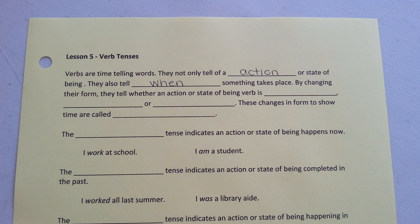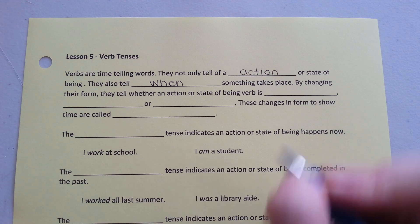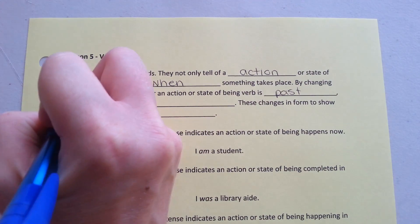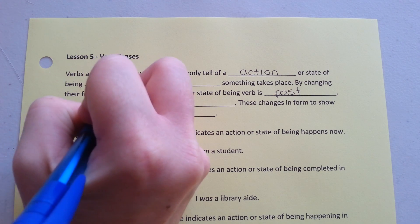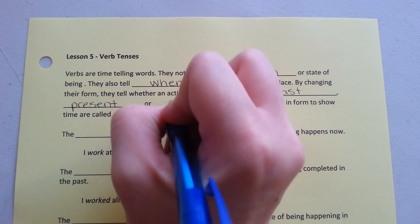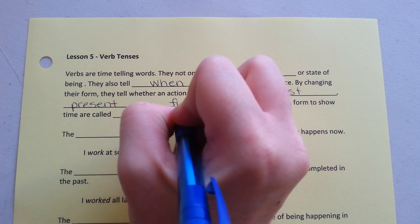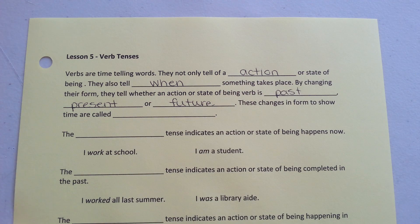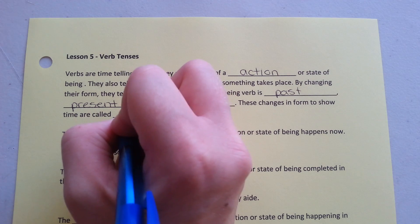By changing their form, they tell whether an action or state of being verb is past, present, or future. These changes in form to show times are called tenses.